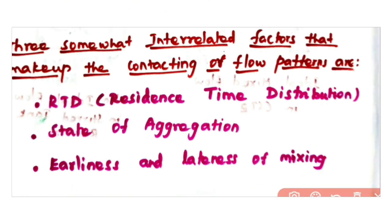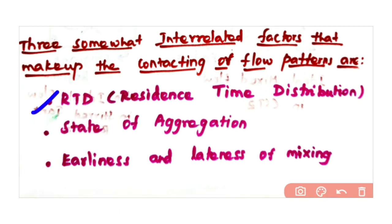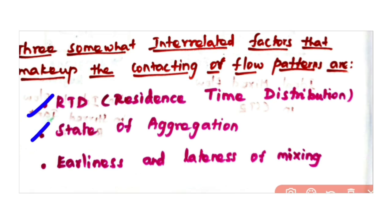Let us see the factors which make up these contacting or flow patterns. The first is RTD of the fluid, that is residence time distribution of the fluid flowing through the vessel. The second is the state of aggregation of the fluid. The third is the earliness and lateness of fluid mixing in the vessel.